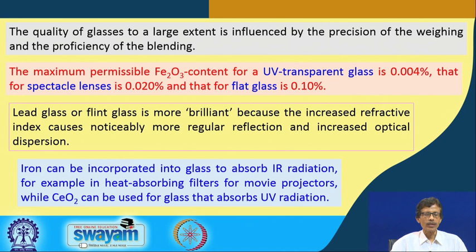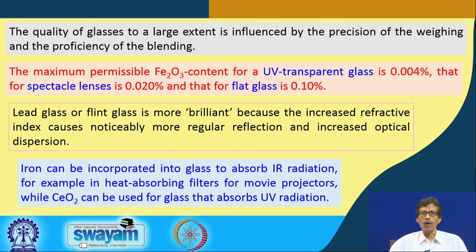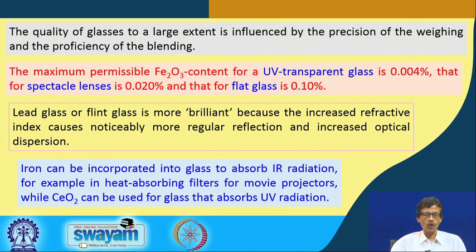Iron can be incorporated — as we have just seen for Fe₂O₃ — and similarly any other iron salt can be used, but it should be converted to the corresponding oxide. These oxides are mixed together in the glassy network structure — a three-dimensional huge network made up of metal ion or silicon centers attached to oxides. If we incorporate iron, the glass can be useful for absorbing IR radiation, for example in heat-absorbing filters for movie projectors.